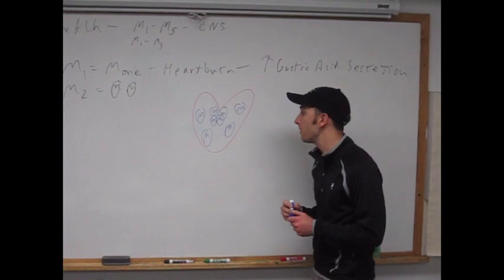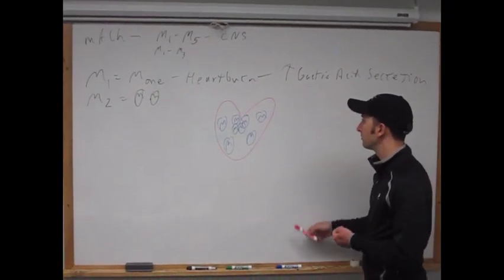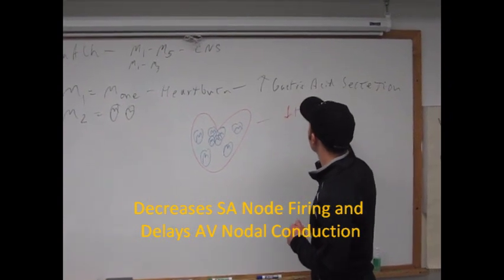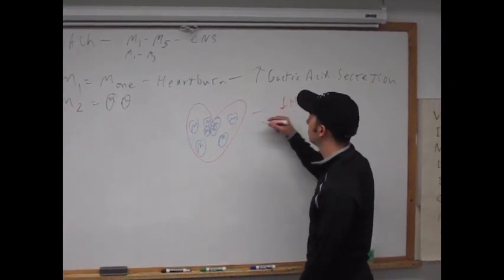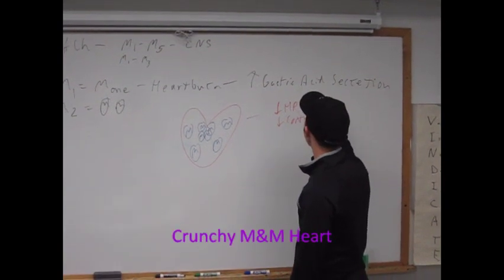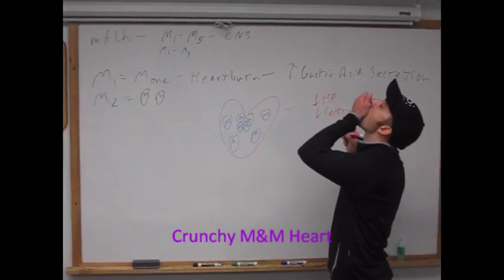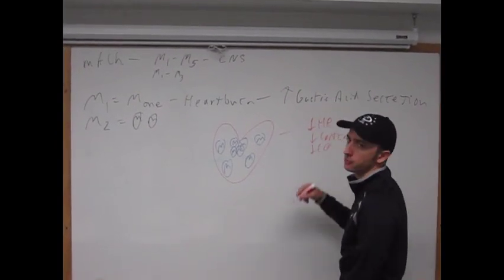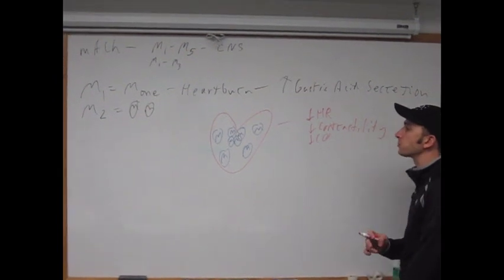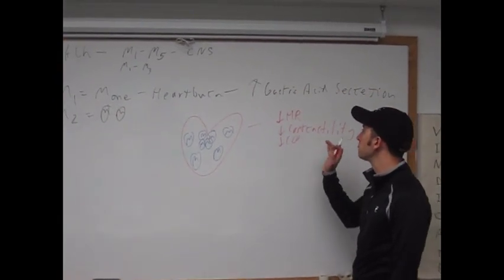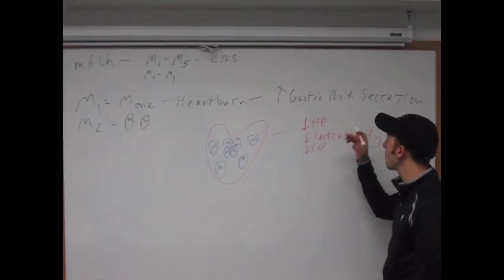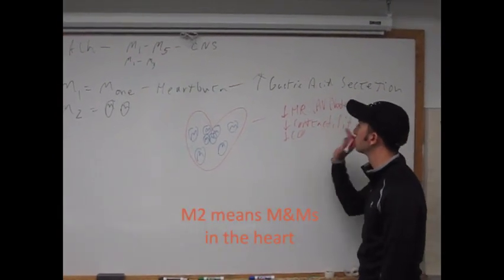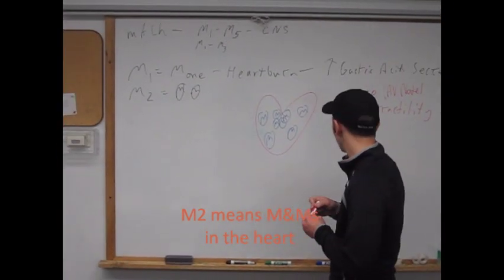What would that have to do in your heart? Well, it's going to decrease the heart rate. It's going to have an AV node block there. What else is it going to do? Decrease contractility. We're also just decreasing cardiac output as a result. So M2, what it does is, affects the heart, decreasing heart rate, contractility, cardiac output. Like a bunch of M&Ms here.